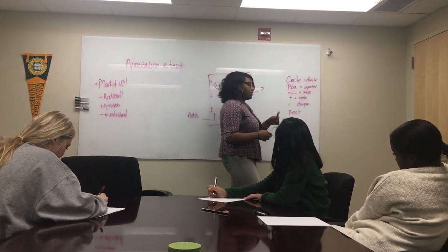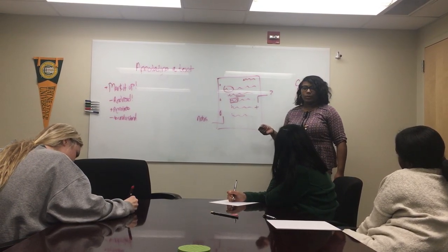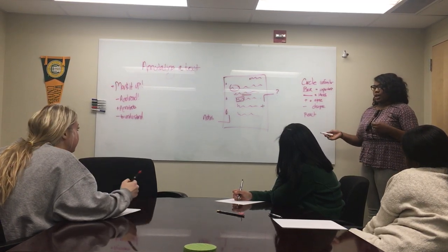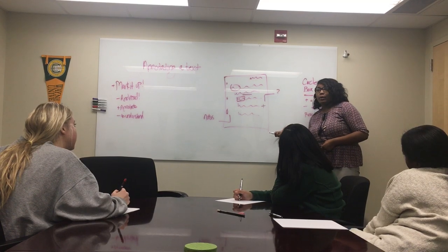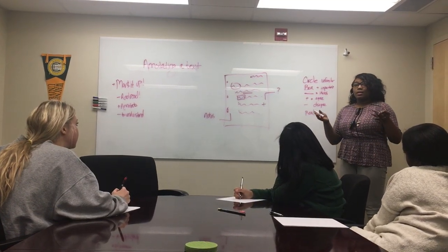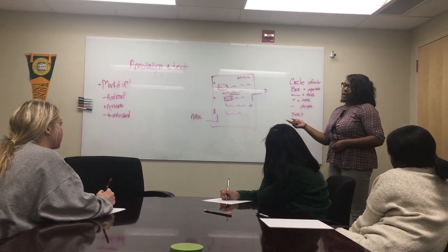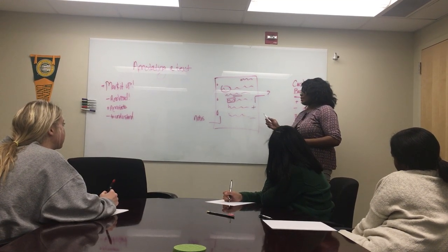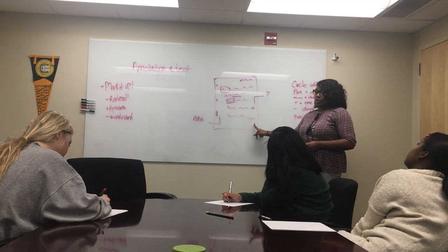I also have a plus and minus. You can plus something in the text and say, 'I agree with that — I agree with what the author is doing, I agree with this style change, I agree with this point.' This helps when you're writing a paper based on what you read, because you can go back to the exact points and say, 'I agree with this, I underlined it, it's important.' You can do the same thing with a minus — 'I don't agree with that.'